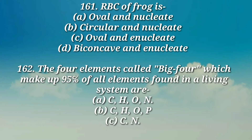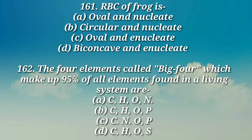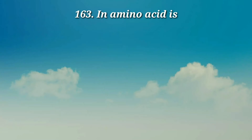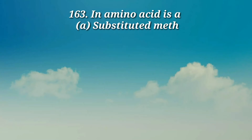Question number 162: The four elements called the 'big four,' which make up 95% of all elements found in a living system, are — a) CHON, b) CHOP, c) CNOP, d) CHOS.